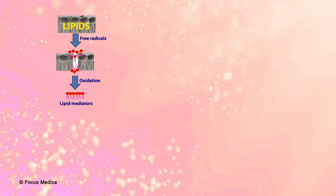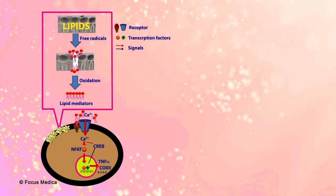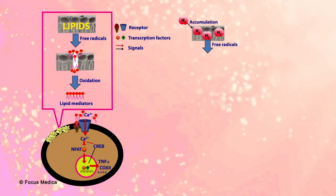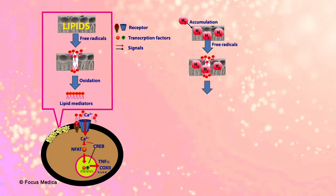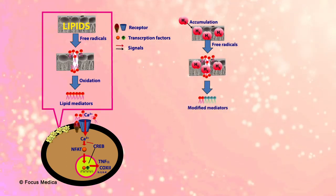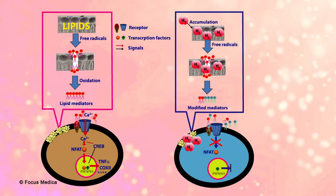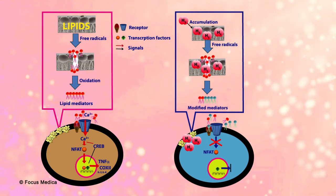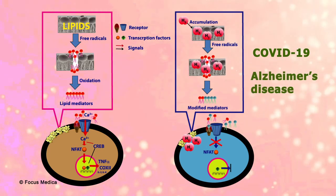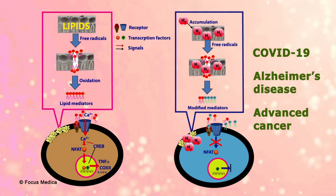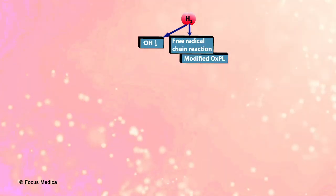The resulting suppression of Ca2+ signaling inactivates multiple functional nuclear factor of activated T cells (NFAT) and cAMP response element-binding protein (CREB) transcription factors, which may explain H2's multifunctionality. Inactivation of NFAT by H2 may also play a beneficial role in treating COVID-19, Alzheimer's disease, and advanced cancer.